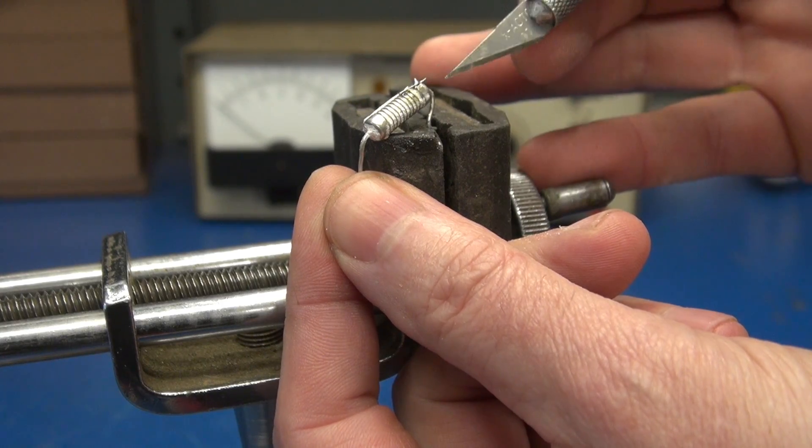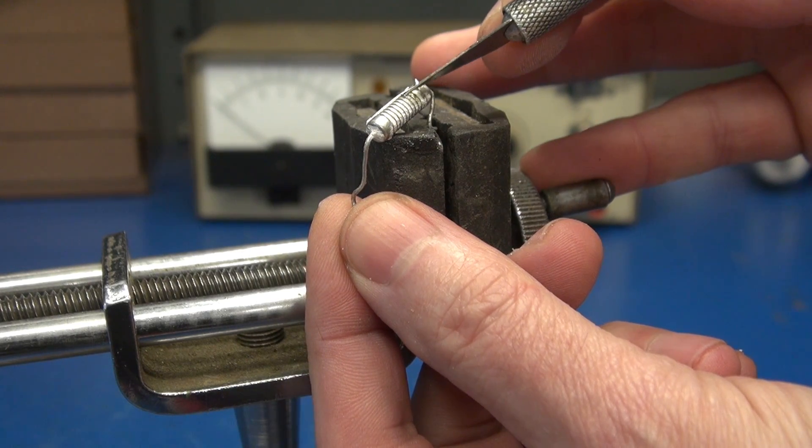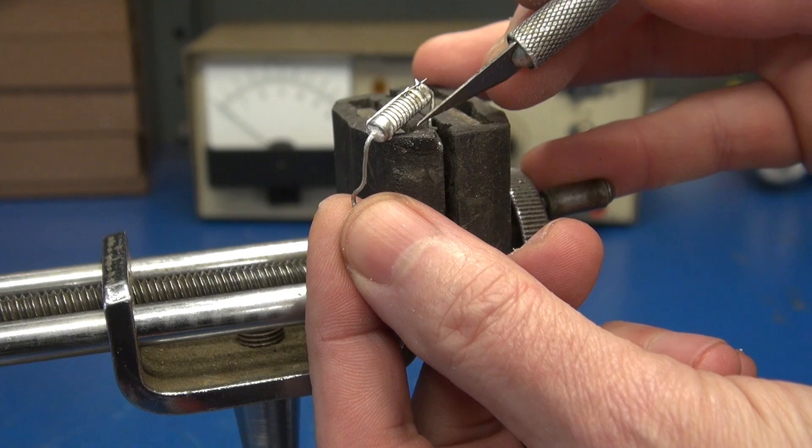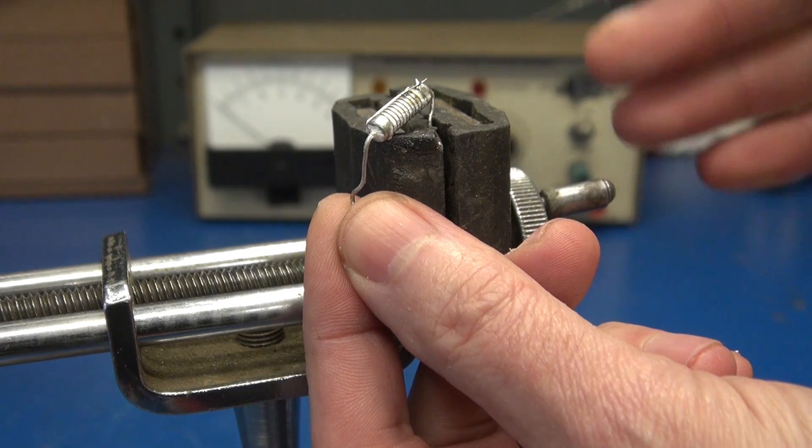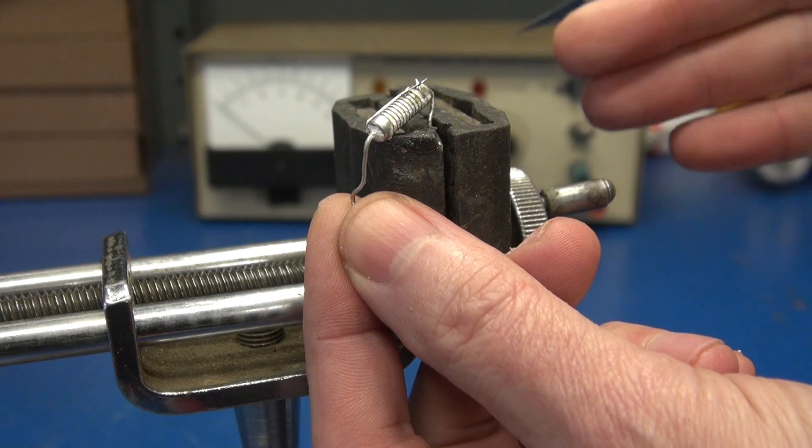So here is my modified shunt resistor. I took a little piece of wire and I soldered it across some of the windings to reduce the value of resistance. So now we need to test and see what that resistance is.